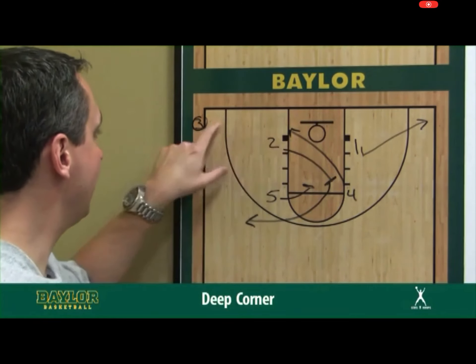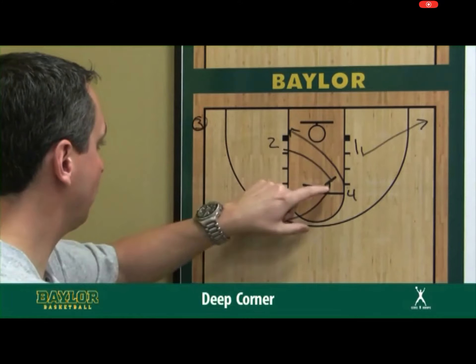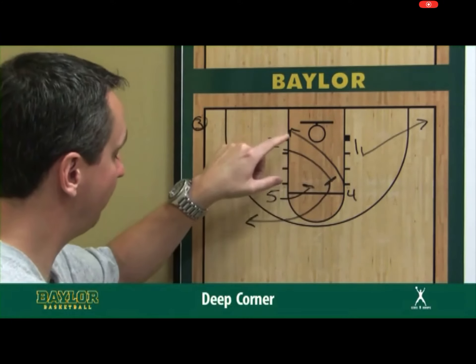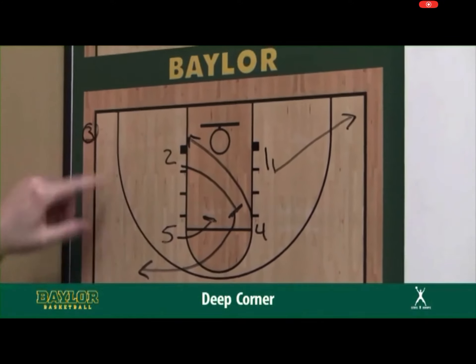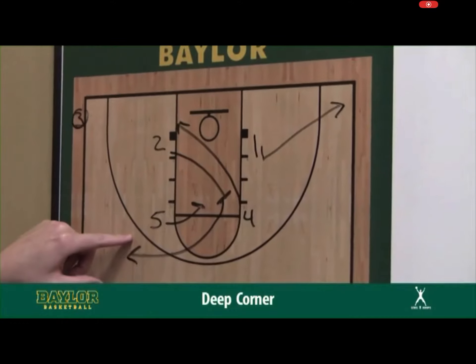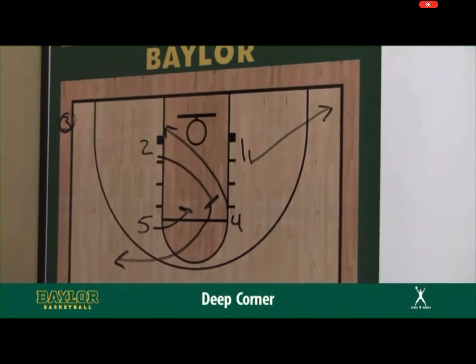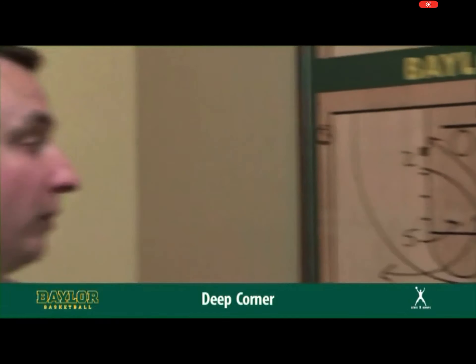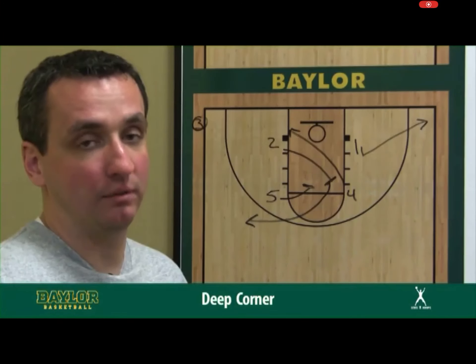So our two options in this deep-corner inbounds situation: we get the two setting a back screen for the four on the block for a direct pass, or we toss to the two coming off the five's screen. Hopefully we get a high-percentage bucket around the rim or a high-percentage three coming off screen-to-screen action.